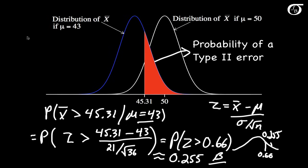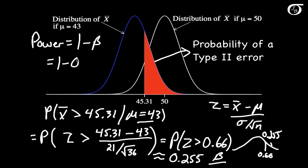The power of a test is the probability of rejecting the null hypothesis when it is false, and that is simply 1 minus beta. In this setting, that's 1 minus 0.255, or 0.745.